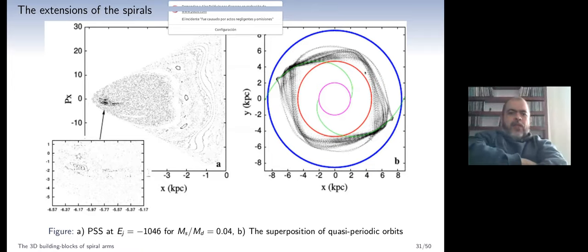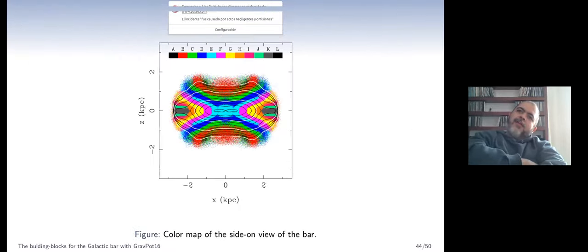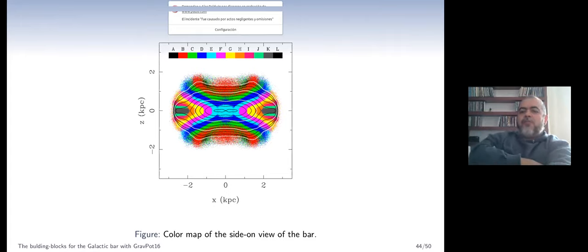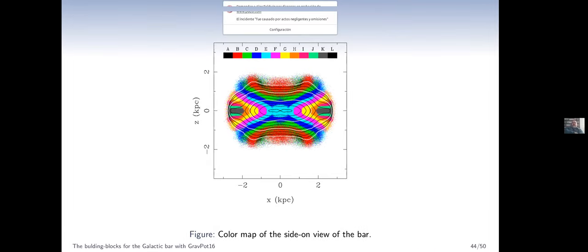May I ask my other question? In your slide near page 44, that's a very nice plot. Could you calculate or reconstruct the distribution function from observations of a given bar? Will it be possible to reconstruct the distribution function from the superposition of orbits, or is that not feasible? From observations, we can extract the galactic potential, and to obtain the orbits we need a potential, a distribution of mass.